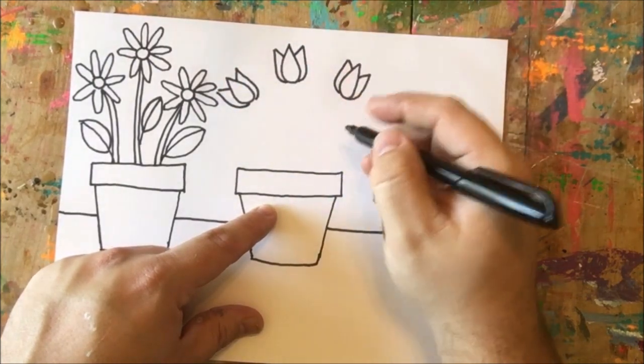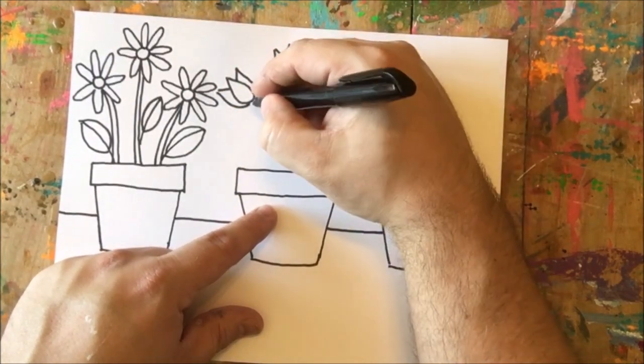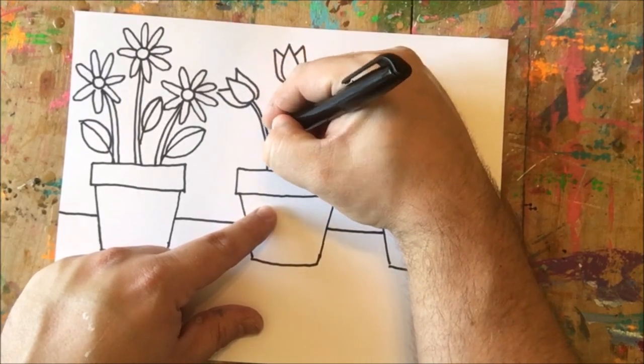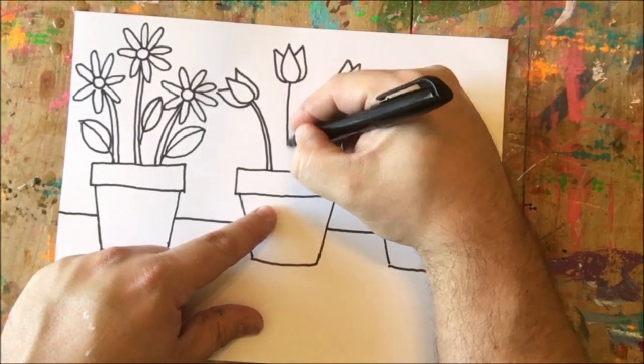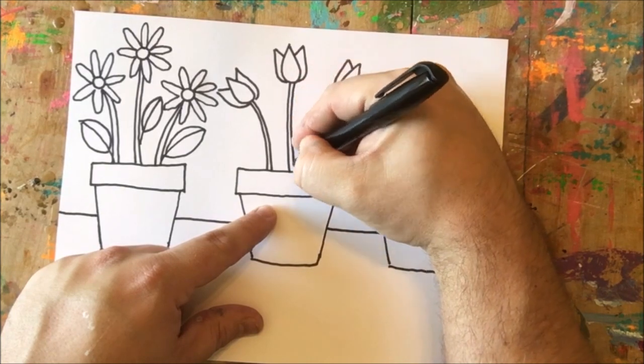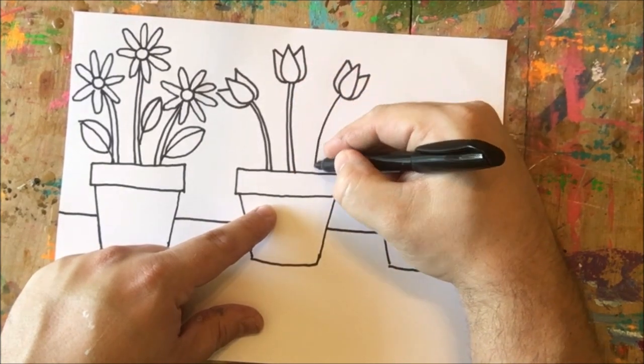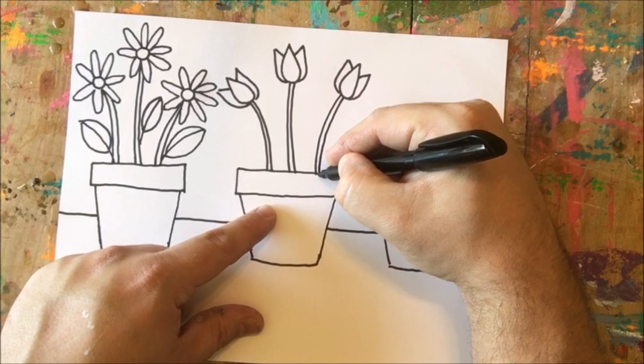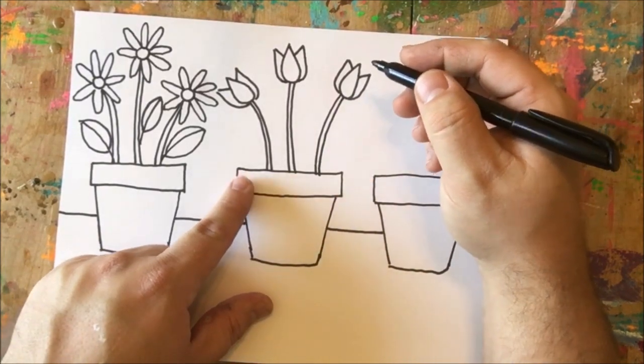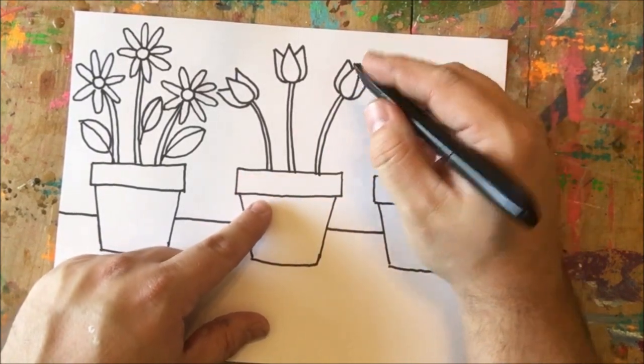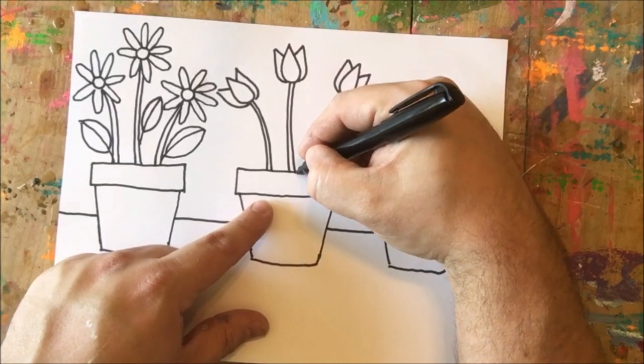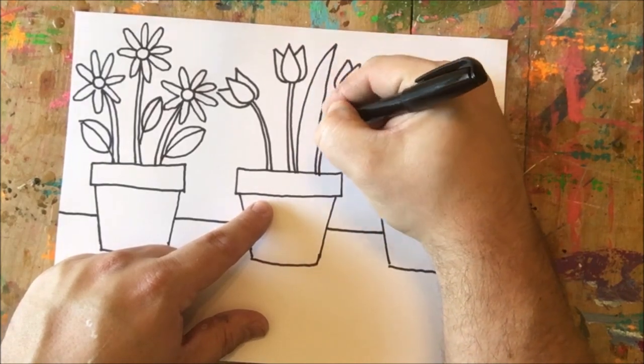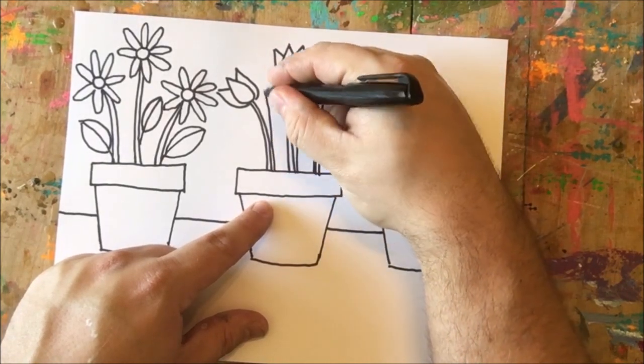Once again I'm going to add three stems using two lines for each. Tulips tend to have really long skinny leaves, so I'm going to draw a long skinny leaf in these empty spaces here.